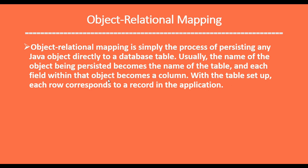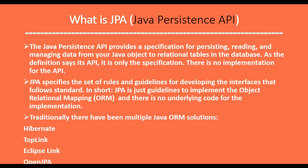Now let's see what is JPA — Java Persistence API. ORM is a technique we can use to persist a Java domain object directly into a relational database table. JPA provides a specification for persisting, reading, and managing data from your Java object to the relational tables in the database. As the definition suggests, it is only a specification — there is no implementation for the API.